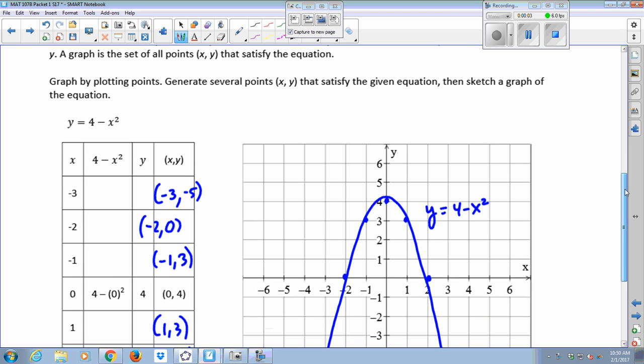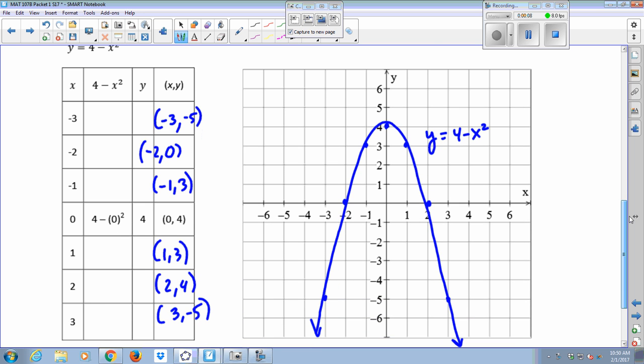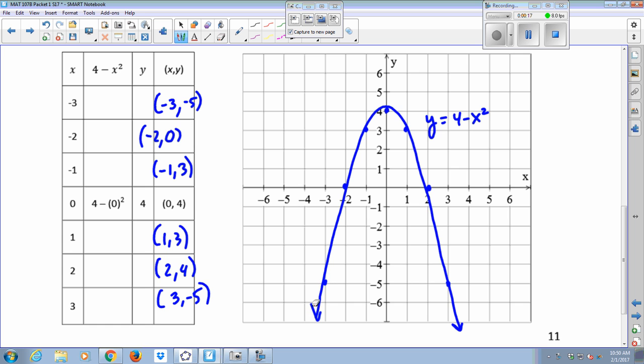So you were asked to graph the equation y equals 4 minus x squared by generating, in this case, one point was given to you, one solution to that equation, 0, 4 was given to you. And then you plotted three other points and connected them with a smooth curve.